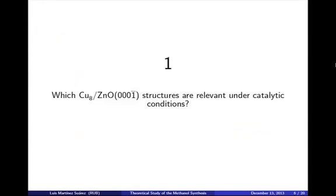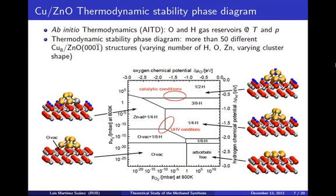In the first step, I asked the question: what are relevant morphologies for copper zinc oxide under catalytic conditions? To investigate that, I used the ab initio thermodynamics formalism, which relates DFT total energy calculations at zero Kelvin with a thermodynamic description of the gas phase. As a result, a thermodynamic stability phase diagram was obtained, including more than 50 different structures for copper zinc oxide, with different numbers of hydrogen, oxygen, and zinc atoms, and also varying the shape of the cluster.